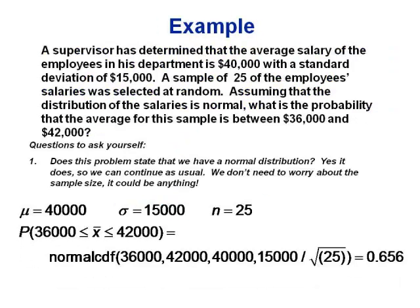Another example: a supervisor has a mean and standard deviation for employee salaries. We take a sample of 25 employees and find the probability their average salary is between $36,000 and $42,000. The problem says to assume a normal distribution, so we don't need to worry about sample size — it can be under 30. Since it's between two numbers, we use normalCDF: bounds 36,000 to 42,000, mean 40,000, standard deviation 15,000 divided by the square root of 25. That gives 0.656 — a 65.6% chance.